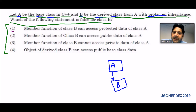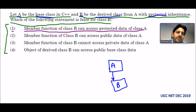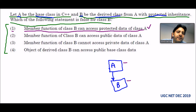Option A says: member function of class B can access protected data of class A. This statement is true, because whenever we use protected inheritance, all the protected members of class A come into class B. So this statement is correct.